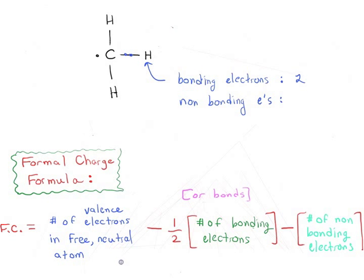And the number of valence electrons in a free neutral atom of hydrogen is one. So one minus one-half times two is one minus one. No non-bonding electrons, zero there. So obviously these hydrogens are all neutral here. Zero.